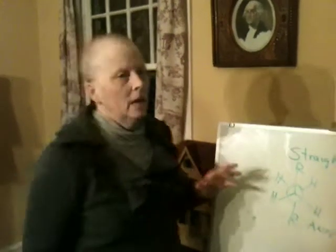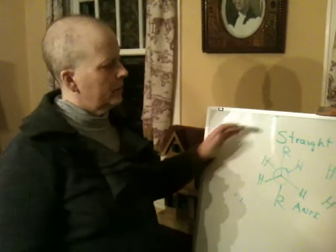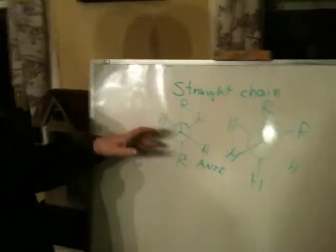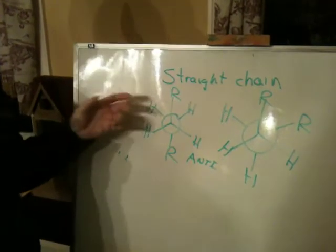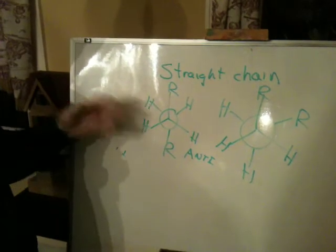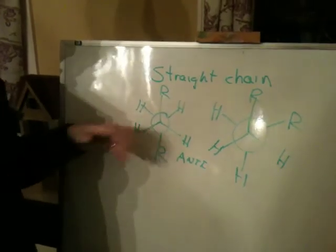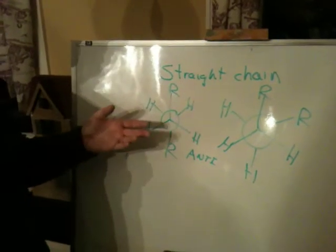Hi class. I was kind of worrying about conformational analysis and I'm still kind of worried about it. When you have a straight chain compound, what you're supposed to do is draw a Newman projection of the bond that has the greatest number of groups on it, and then analyze it with regard to the energy of each conformer and try to predict which conformer is the most dominant.